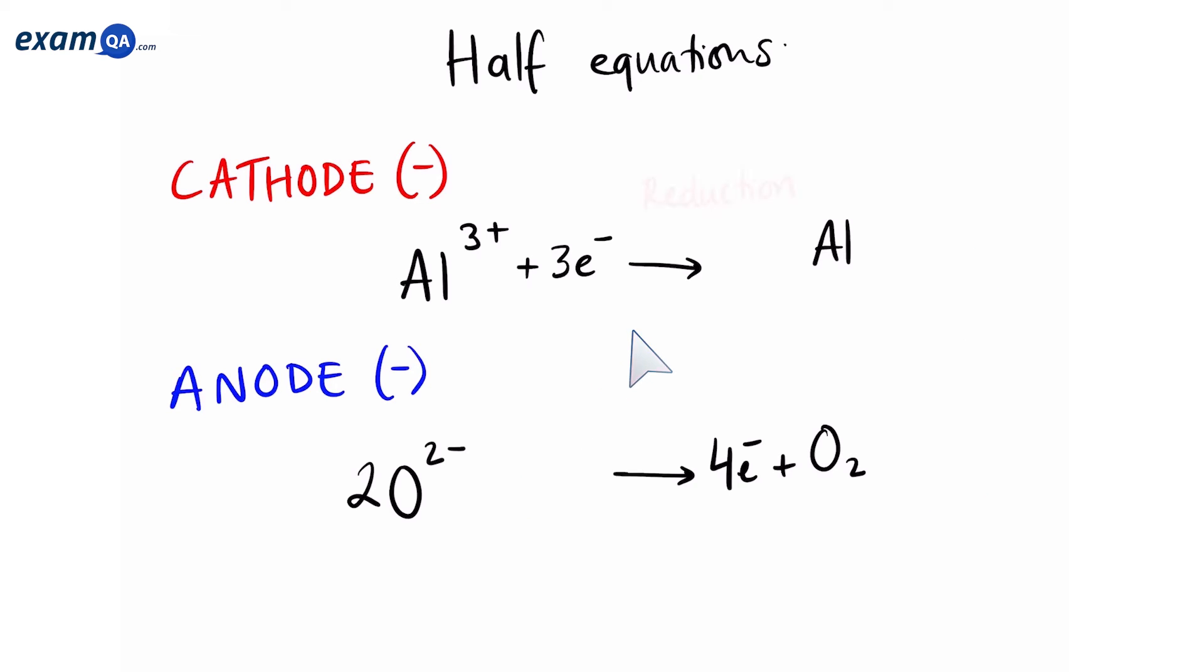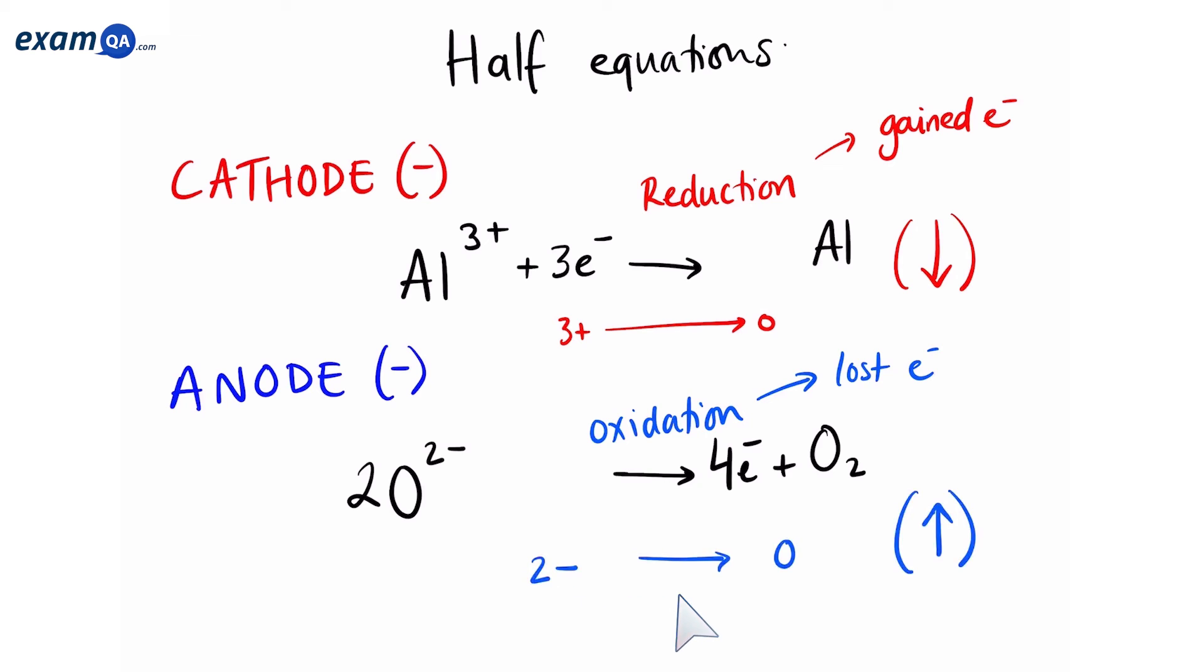The first reaction is a reduction reaction because it has gained electrons. Another way to identify it is to look at the charge. The charge of aluminium has gone from plus three to zero. So, it has gone down and therefore it has been reduced. The second reaction is an oxidation reaction because it has lost electrons. In terms of charge, oxygen has gone from two minus to zero. So, it has increased in charge and therefore it has been oxidized.